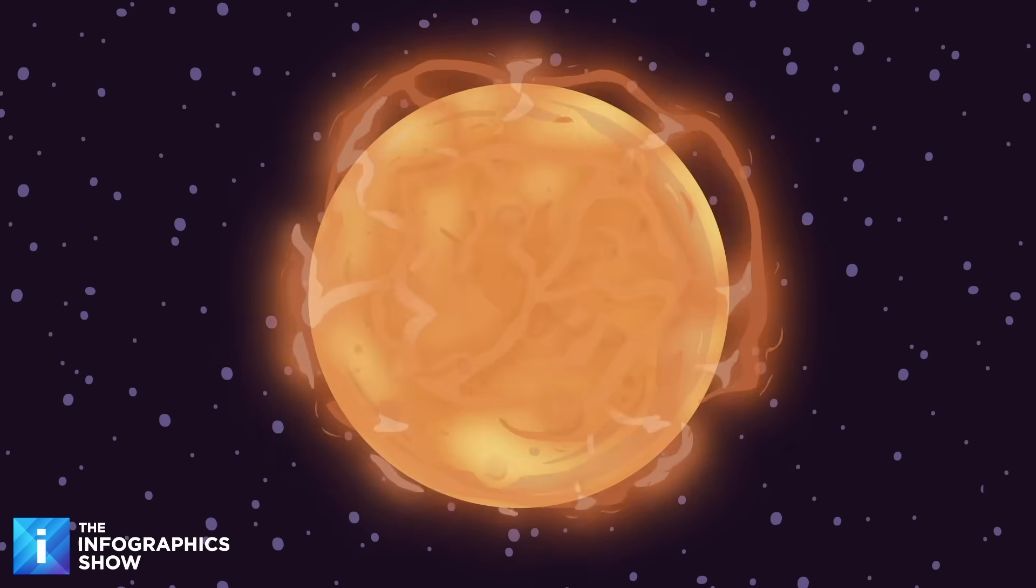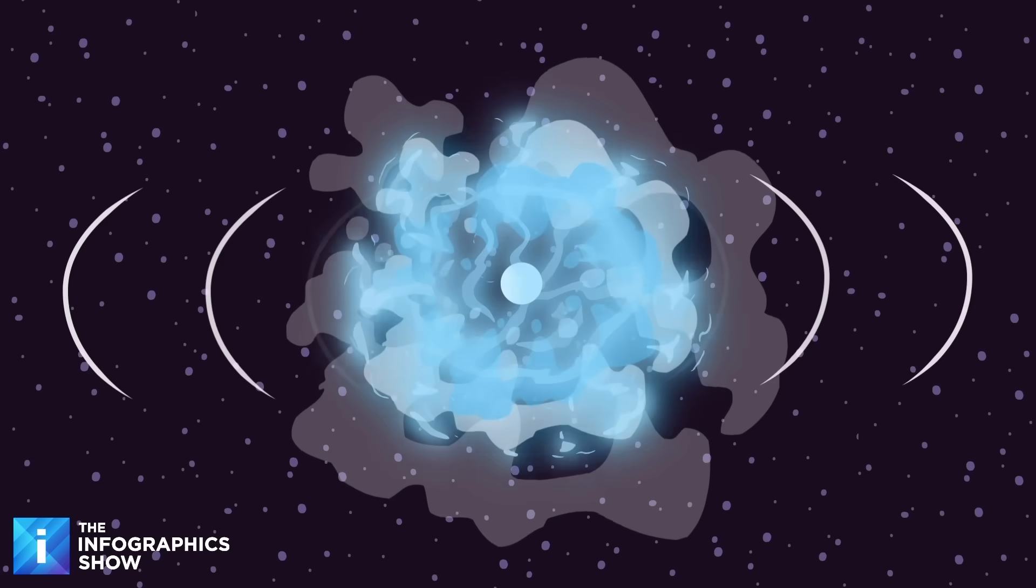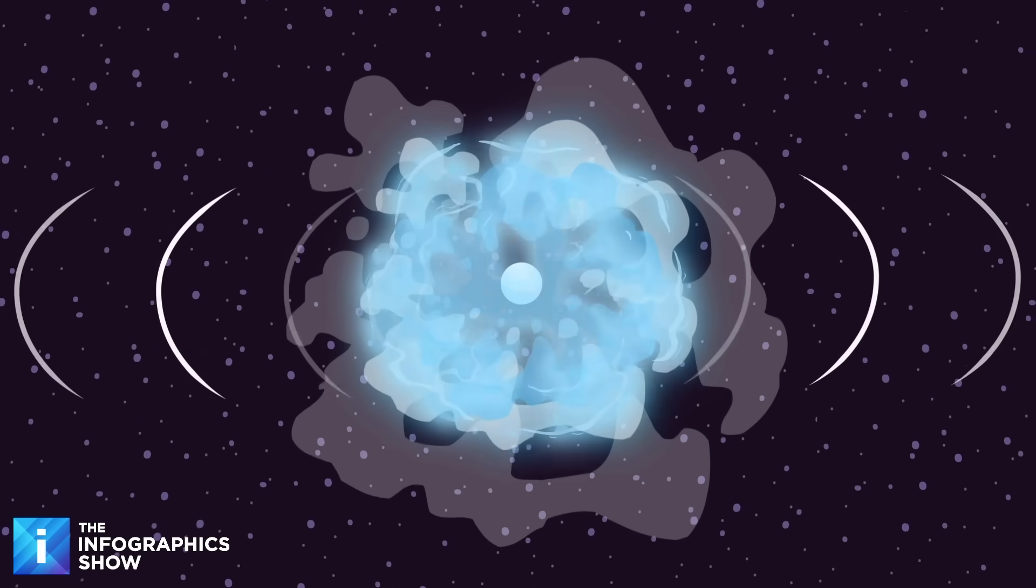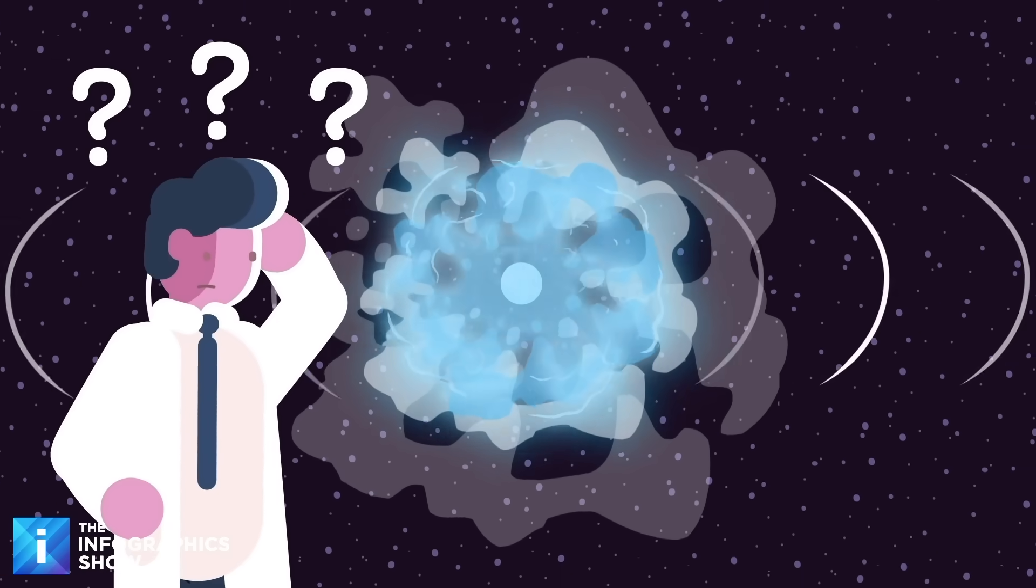Most magnetars come from supernovae, those big explosions of massive stars. But in this case, scientists are now saying, what if this one was made differently? What if this magnetar formed not from supernova, but from a white dwarf that collapsed inward?